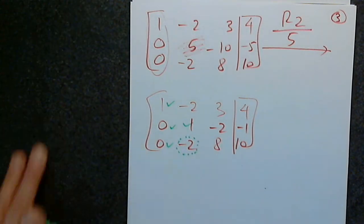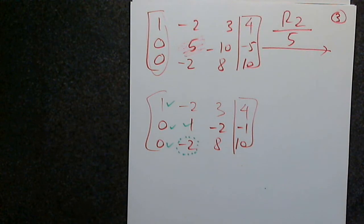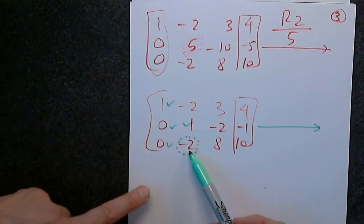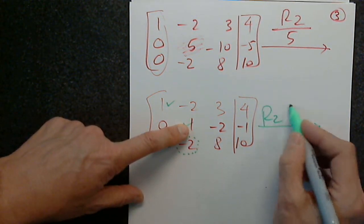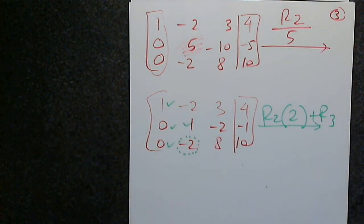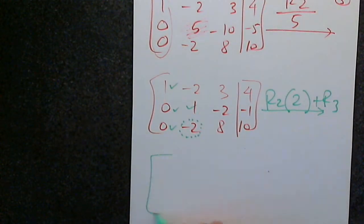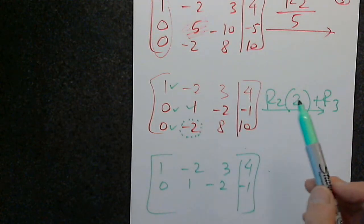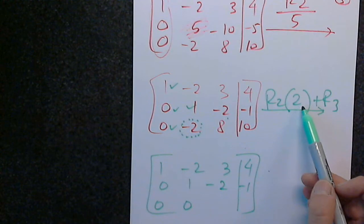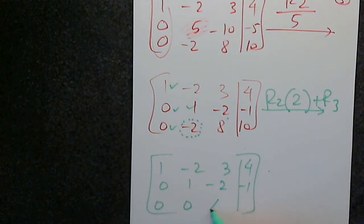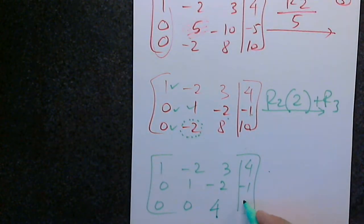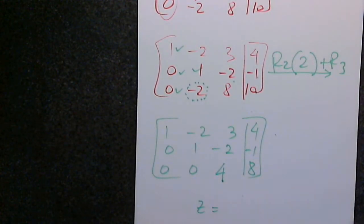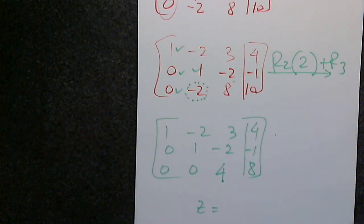For Gaussian elimination with back substitution, we only need a 0 instead of negative 2 in row 3. We multiply row 2 by 2 and add to row 3. This gives row 3: 0, 0, 4, 8. So z equals 8 divided by 4, which is 2.